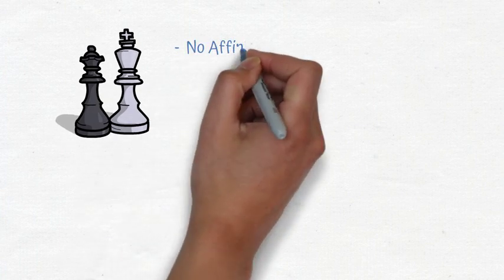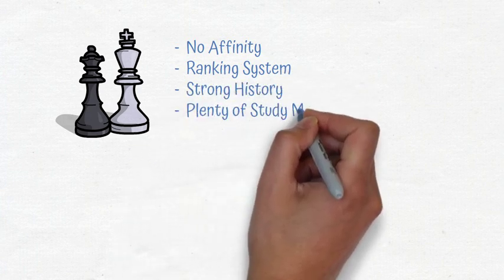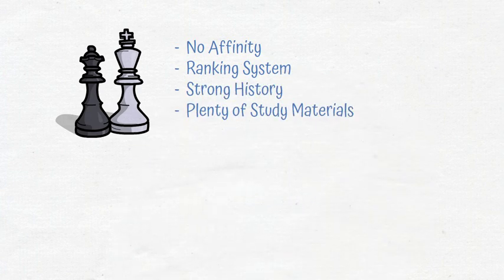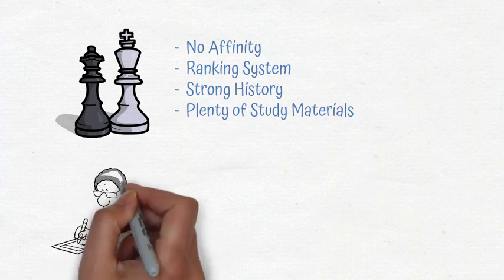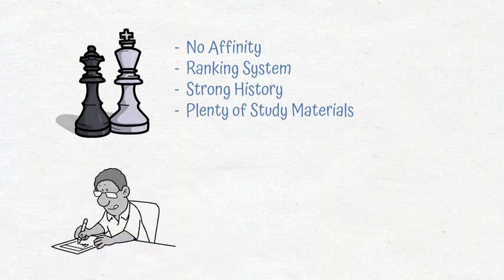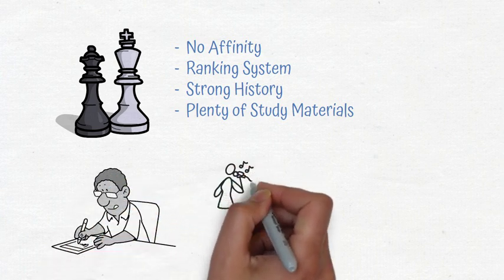Laszlo decided to teach his children chess. While one of them may have an affinity for the game, it was nearly impossible that all three would have a gift for the game. Plus, chess has clear objectives, a ranking system, and a strong history of games and material to learn from.